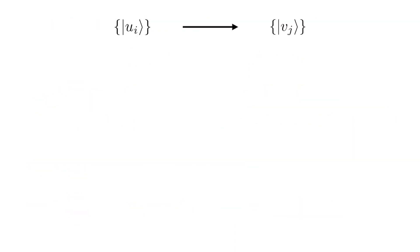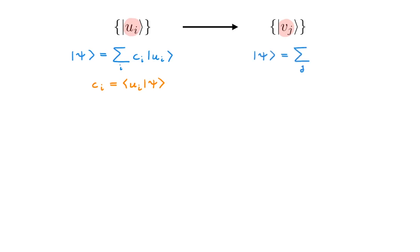The central question in this video is: how do we go from one representation u to a different representation v? Let's start with kets. First, we write out a ket psi in the u basis, and the expansion coefficients are given by the bracket between the u basis and the state psi. We can also write the same state psi in the v basis, and in this case I call the expansion coefficients d, which in turn are given by the bracket between the corresponding basis state v and the state psi. Changing basis essentially means: given the c coefficients, which are the representation of psi in the u basis, how do we find the d coefficients, which are the representation of psi in the v basis?